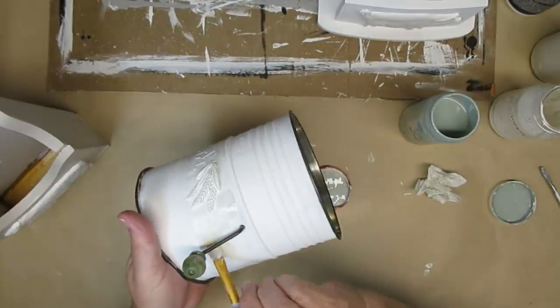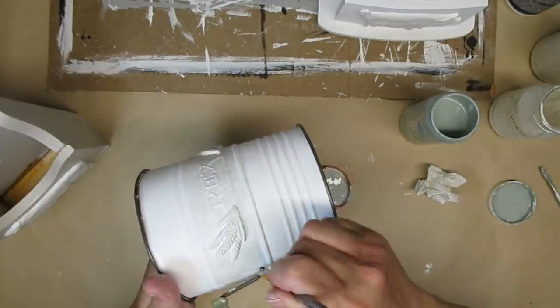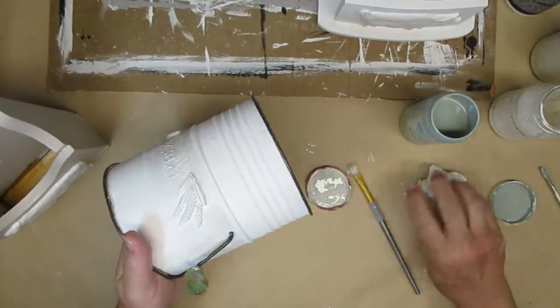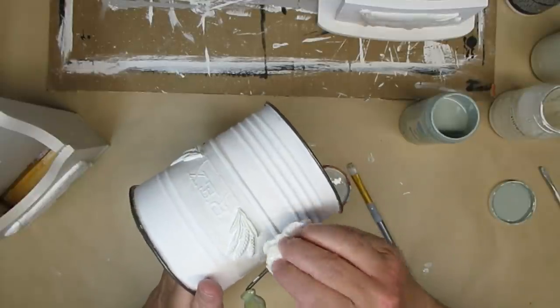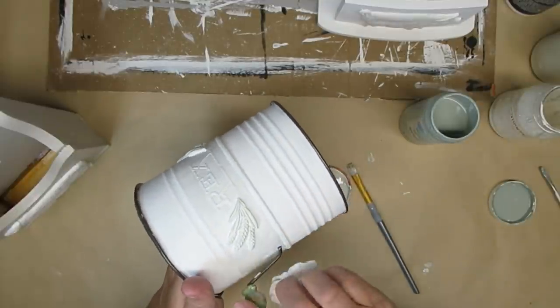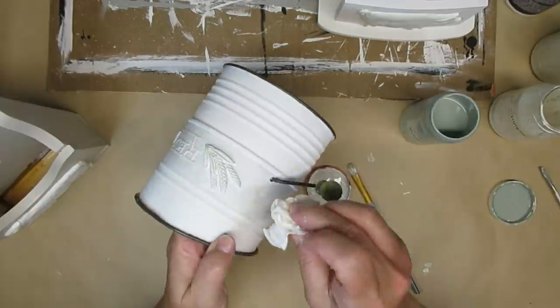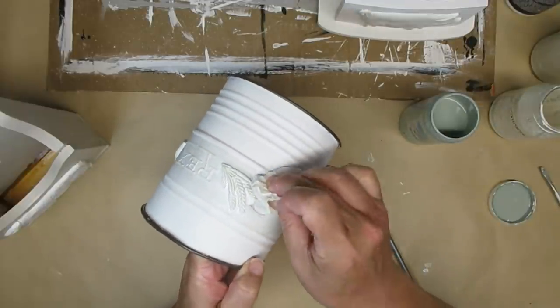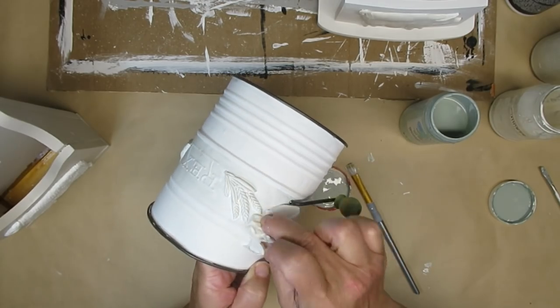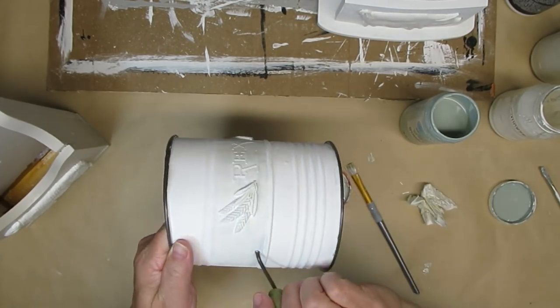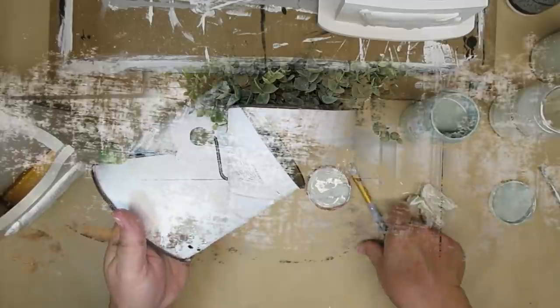I added just a light coat like you see me doing here and then I took the tissue and just gently dabbed it, making sure to get rid of all the brush strokes. I really like how this one turned out. I wasn't quite sure when I started adding the green, but I think just that subtle hint of color makes it look really nice.